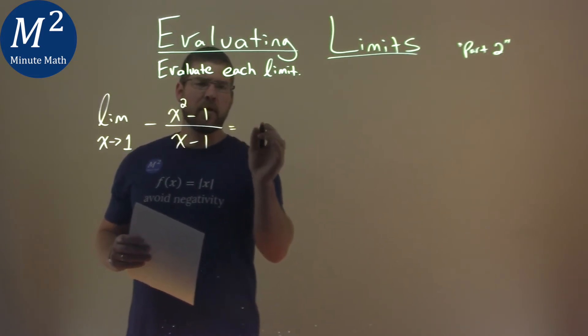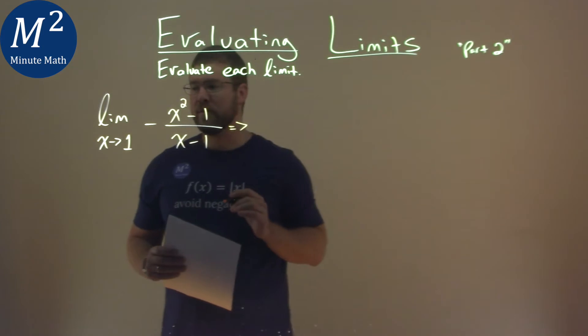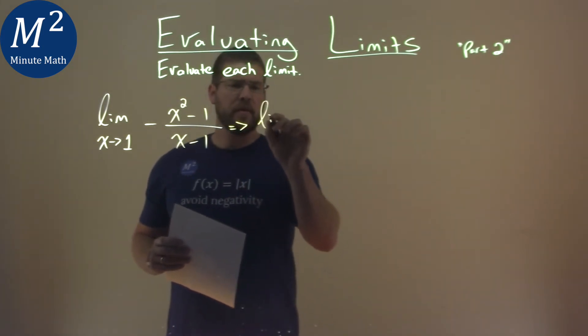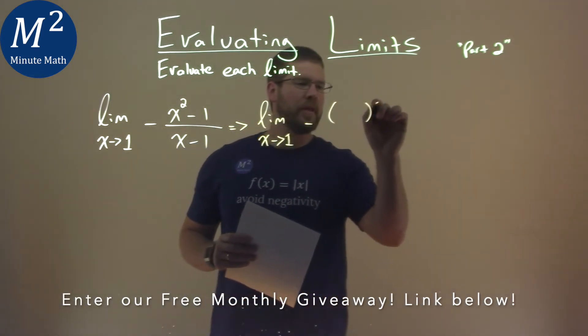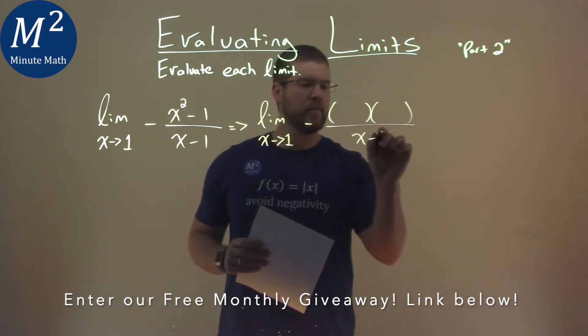So I see the top part can factor, so I'm going to factor that top part. So again, we write the limit as x approaches 1 of negative and we're going to try to factor that numerator. That's going to be over the x minus 1.